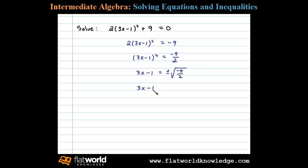In this case we have plus or minus the square root of negative 9 over the square root of 2. Now the square root of negative 9 is 3i, so we have 3i over the square root of 2.